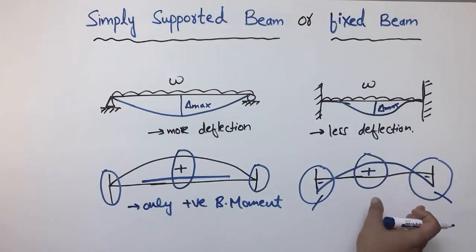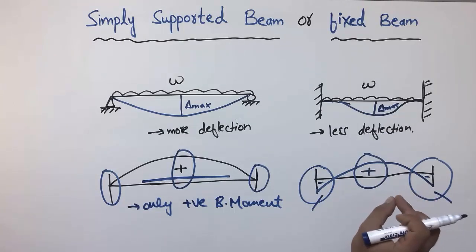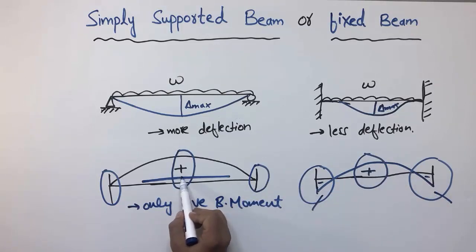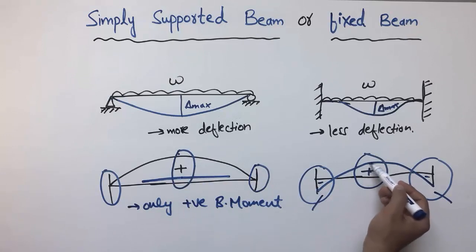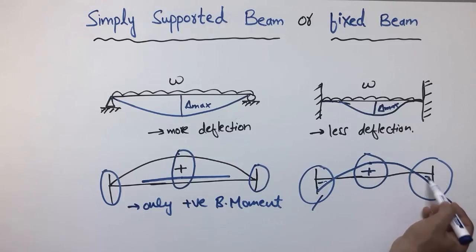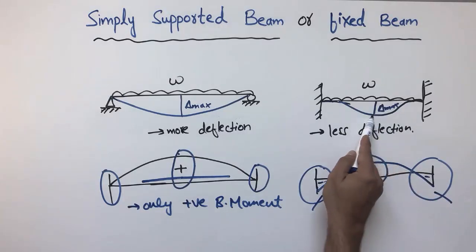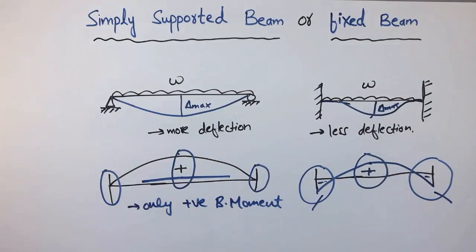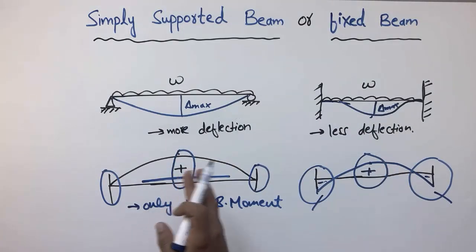This can be seen as a disadvantage, but if we compare: the bending moment at the midpoint of the fixed beam is smaller than that of the simply supported beam because it has been distributed into the negative moment at the supports. We also have less deflection in the fixed beam compared to the simply supported beam. So each beam has its advantages and disadvantages, and you must choose according to your analysis.